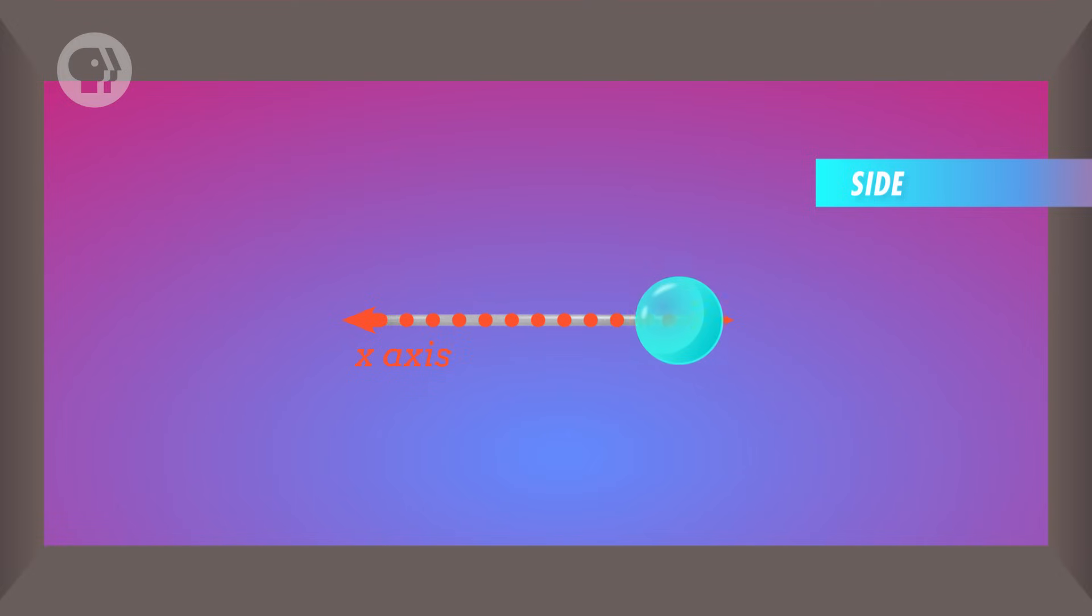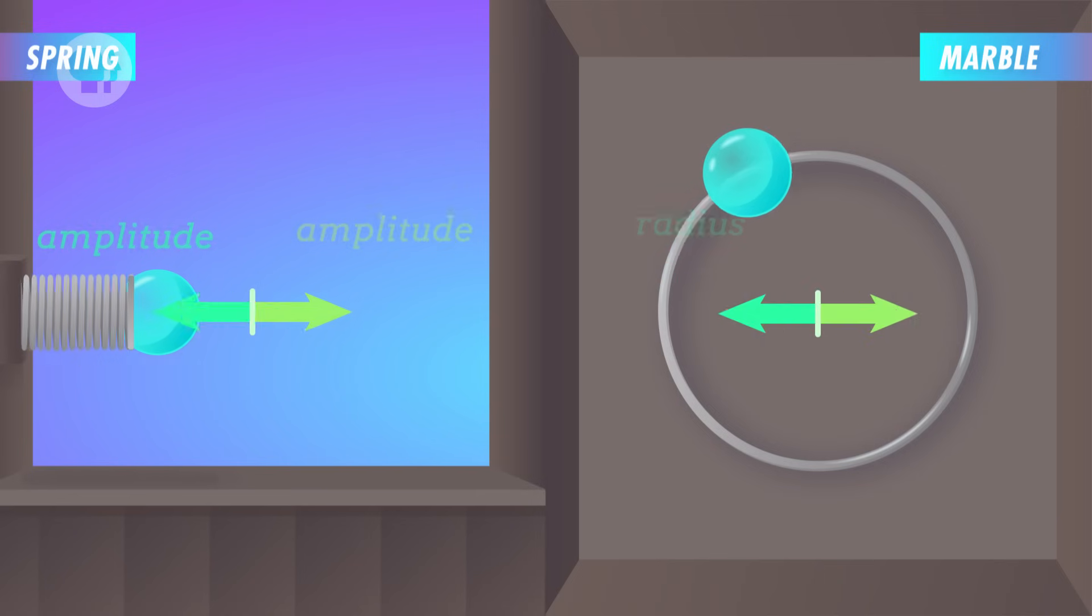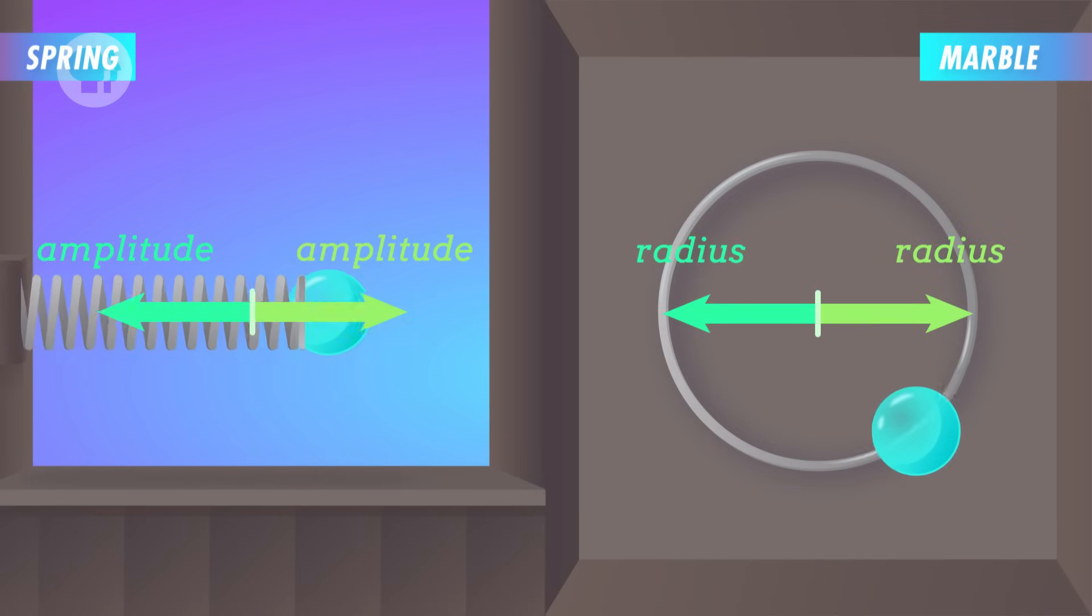Not only that, but it looks like this marble is stopping momentarily as it changes direction, and moving faster as it gets closer to the middle. Which is exactly the same way the ball was moving on the spring. Now let's take this comparison one step further. Let's assume that the radius of the ring is the same as the amplitude of the ball's motion on the spring. And that the marble's constant speed along the ring is equal to the maximum speed of the ball on the spring.